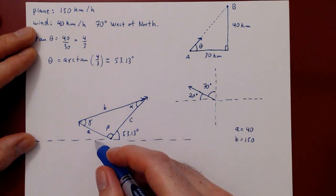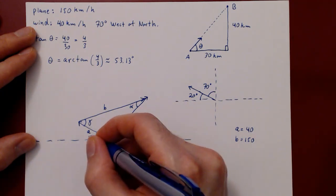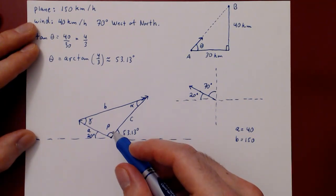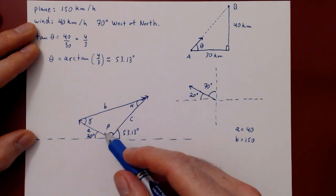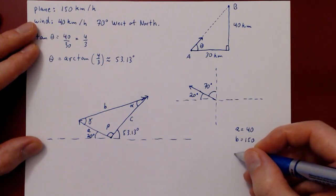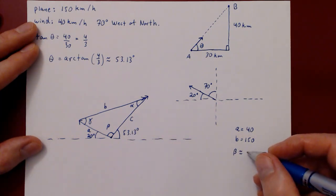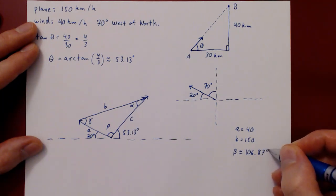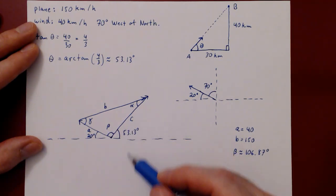We can now find angle β. The total angle along the horizontal is 180 degrees. Subtracting 20 degrees and 53.13 degrees gives us the value of β. Rounding to the second decimal place, β ≈ 106.87 degrees.